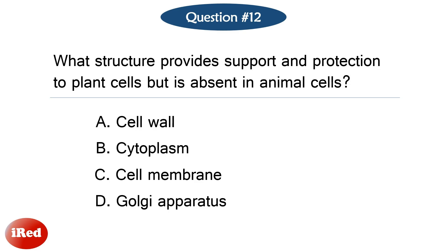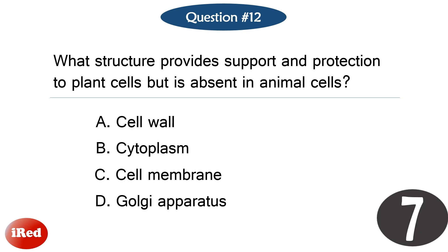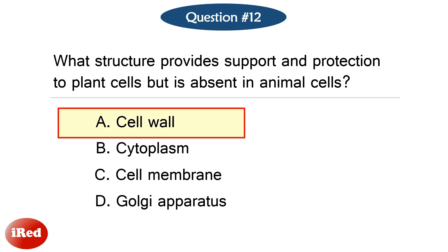Question number twelve. What structure provides support and protection to plant cells, but is absent in animal cells? The correct answer is letter A, cell wall.